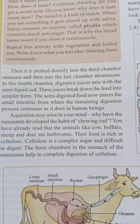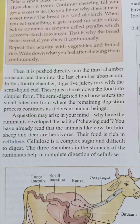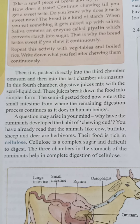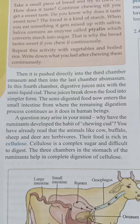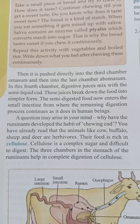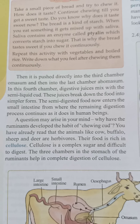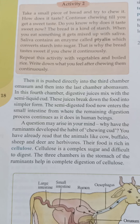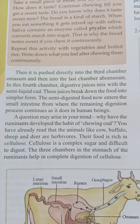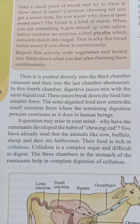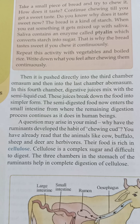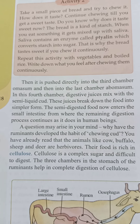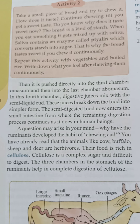From where the remaining digestion process continues, as it does in human beings۔ Small intestine میں گیا اور مزید digestion وہاں ہوتی ہے، جیسا کہ انسانوں میں ہوتا ہے۔ اس کے بعد large intestine میں جاتا ہے، اور جو undigested food ہے وہ بھی انسانوں کی طرح جانوروں میں بھی باہر آ جاتا ہے۔